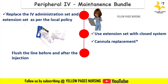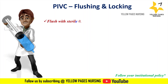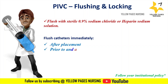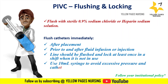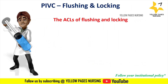Flushing is recommended to promote and maintain patency and prevent the mixing of incompatible medications and solutions. Sterile 0.9% sodium chloride or heparin sodium solution is used for flushing. Flush catheters immediately after placement, prior to and after fluid infusion or injection. The line should be flushed and locked at least once per shift when not in use. Use a 10 ml syringe to avoid excessive pressure and catheter rupture.